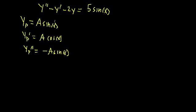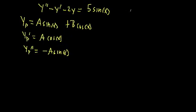If we plug all these in, we need a value of A that makes the equation hold for all x. But we'd have a sine term minus a cosine term minus a sine term on the left, and just a sine term on the right. There are sine and cosine on one side and only sine on the other — this won't work because we're left with an unmatched cosine term. So we need to add a cosine term to our particular solution.